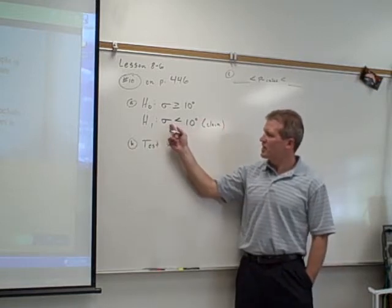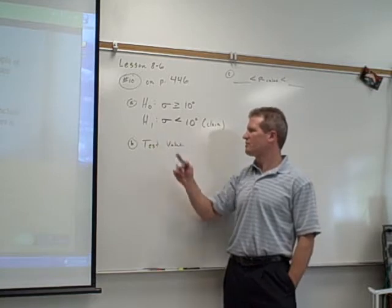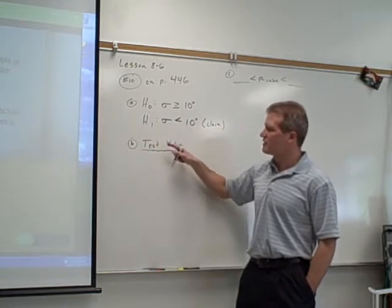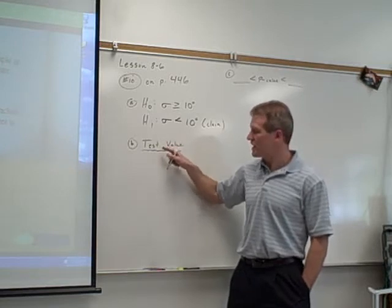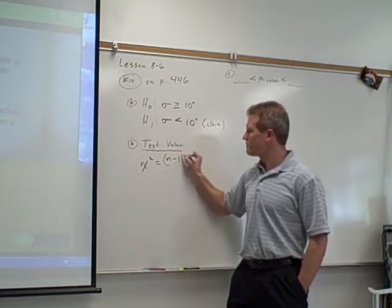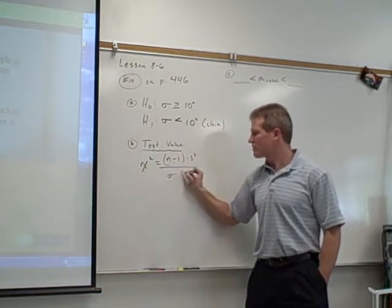Because I'm hypothesizing about a standard deviation or a variance, I'm going to have to use the chi-square distribution to analyze this. To get my test value, we're using the p-value method. The second step is to get your test value using this formula: chi-square equals n minus 1 times s-square over sigma-square.